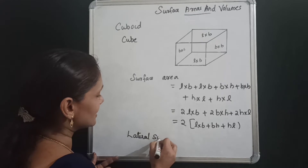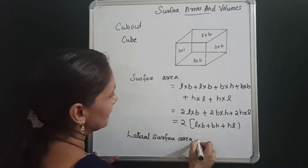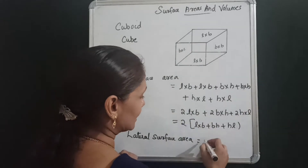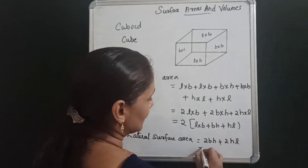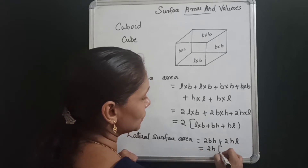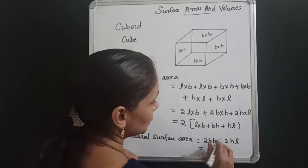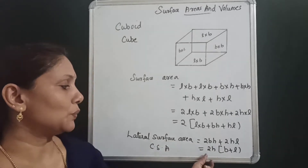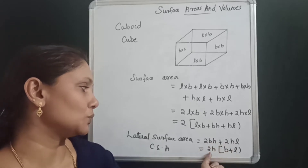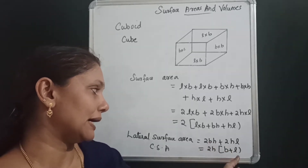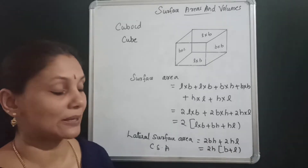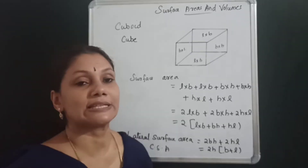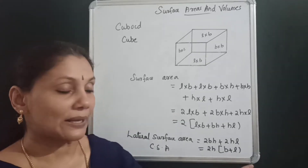This is the lateral surface area. For the lateral surface area of a cuboid, we look at the four side faces. H is the common height. The other sides are B and L. So the lateral surface area is 2H(B + L), which equals 2H(L + B).